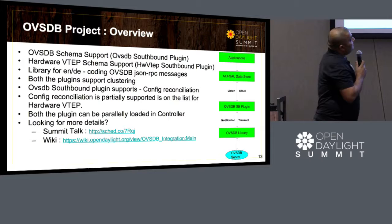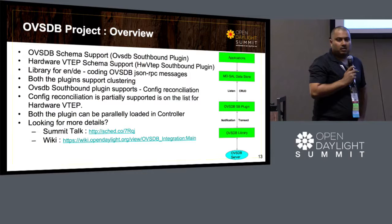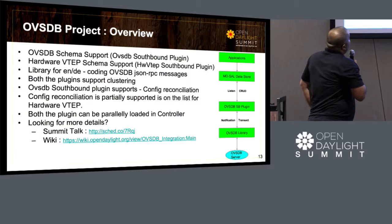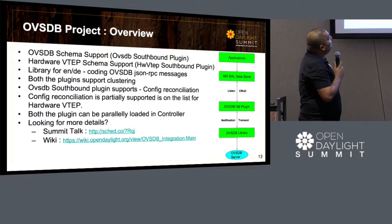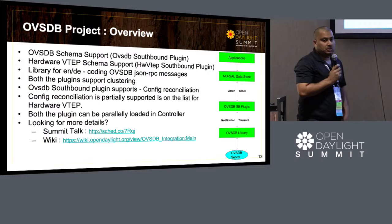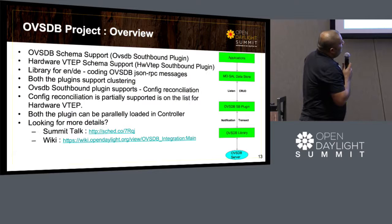It supports two kinds of schemas. One is the OVSDB schema, which is basically a virtual switch — the OVS we see in computers, KVMs, and so on. The other schema it supports is the hardware VTEP schema, for silicon devices running hardware VTEP. You can use the OVSDB plugin to manage those devices. We are going to talk about OVSDB in more detail in a talk tomorrow morning about the OVSDB project, and you can go to the wiki page for more details about what this plugin supports.